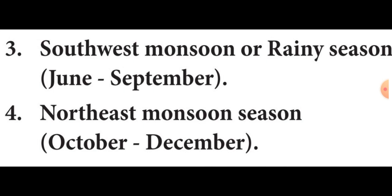Southwest monsoon is otherwise called rainy season. This particular season occurs during the month of June to September. The southwest monsoon is the most significant feature of the Indian climate.